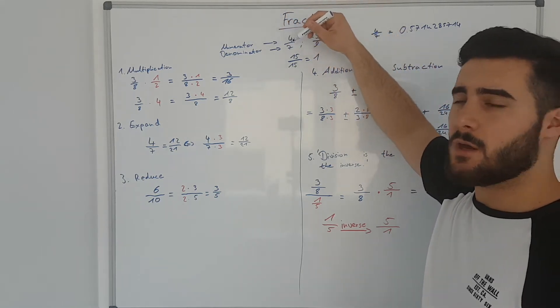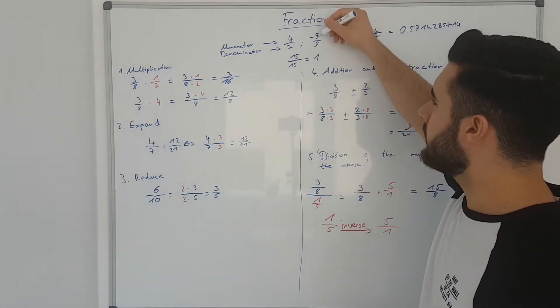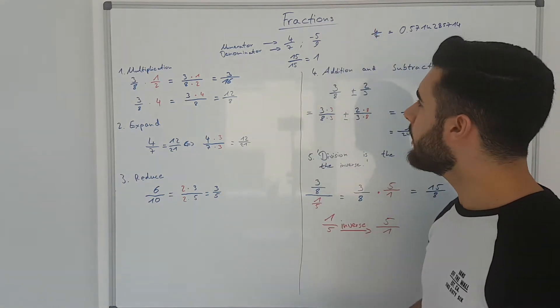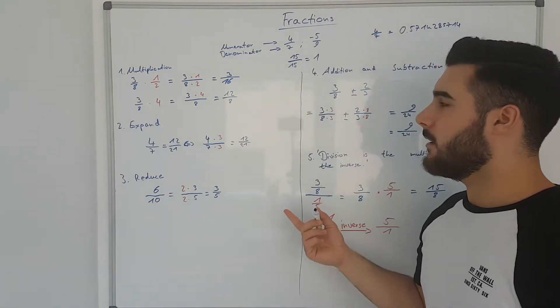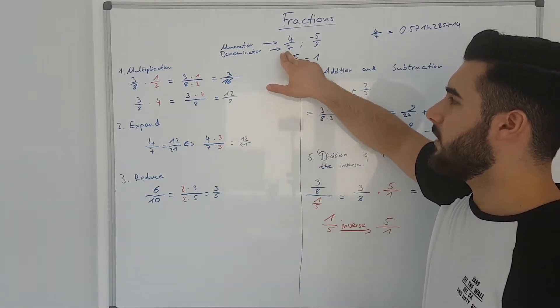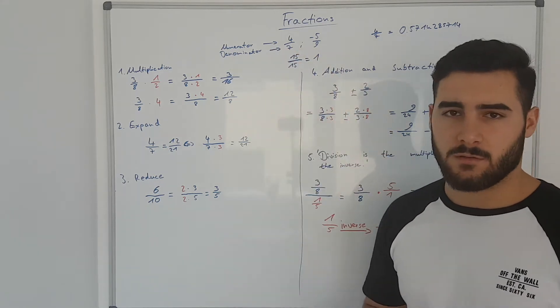Fractions can be negative as well and then if a fraction is negative you would write the minus sign in the numerator usually. And one thing you need to know about fractions for sure is that the denominator can never ever be zero because that's mathematically not possible.